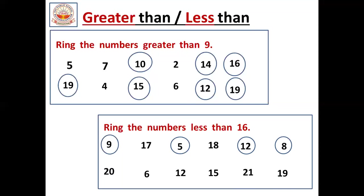Now 6. Is 6 a big number or small number compared to 16? 6 is a small number — 6 is less than 16. Now 12 — 12 is a small number compared to 16, so we should circle it. Now 15. Is 15 a big number or small number compared to 16? It is a small number — 15 is less than 16, so we should circle it.